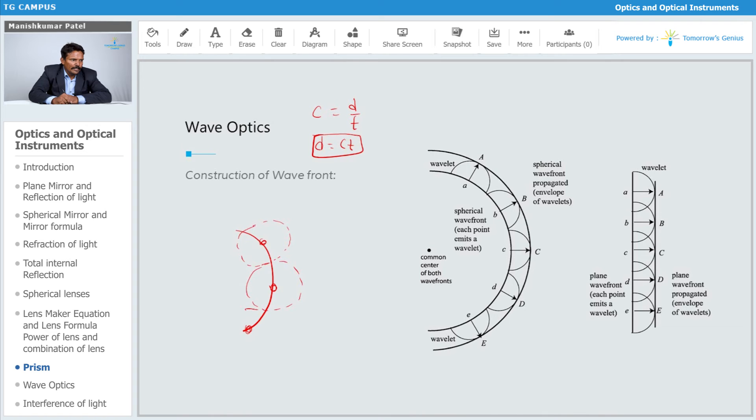Now just draw the tangent to all of them and you will get the next wavefront. Similarly, if you want to get the next wavefront, these are the next points. Again you can draw the next wavefront by drawing another circle. Likewise, the same procedure, you will get the next wavefront. Again join those, draw the tangent, you will get the next wavefront.